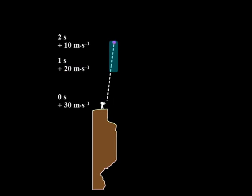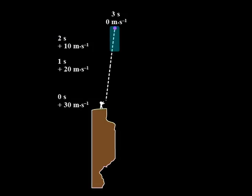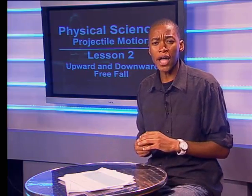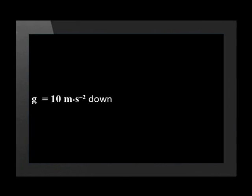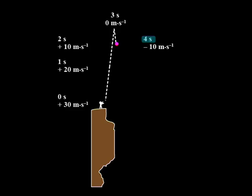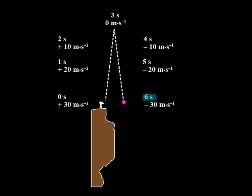So after one second its velocity is now approximately 20 meters per second upward — positive 20 meters per second. During the next second it slows another 10 meters per second, so at the end of second two the ball's velocity is positive 10 meters per second. During the next second the ball slows to zero velocity — it stops. Now it turns around and starts moving downwards, speeding up by approximately 10 meters per second every second. So by the end of second four its velocity is negative 10 meters per second, and by the end of second five its velocity is negative 20 meters per second.